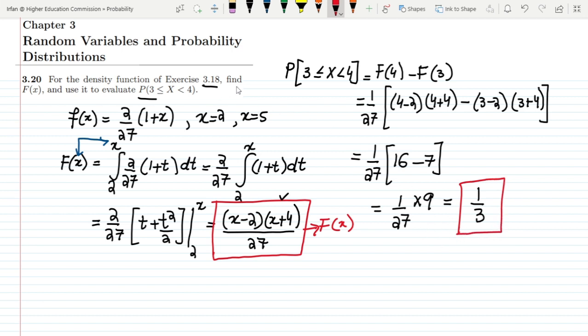So that's it for today in which we have found out the CDF for the exercise problem 3.18 and at the end we have also found out the probability between two ranges from the formula we have derived. If you have any question you can ask me in the comment box. See you soon.